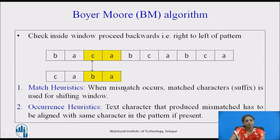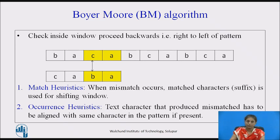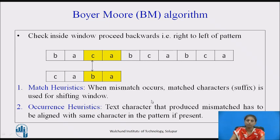Two heuristics will be used. One is the match heuristics — whenever a mismatch occurs, the matched characters are used for shifting the window. In KMP we used prefix information; here we will be using suffix information. The second is occurrence heuristics — the character that produced the mismatch has to be aligned to the same character in the pattern.